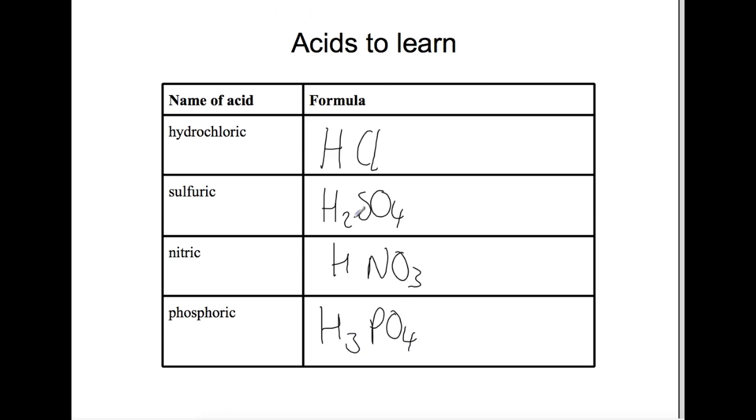You can find the group ions sulfate, nitrate, and phosphate on page 8 of your data book, where you'll find it is SO4 2-, NO3-, and PO4 3-. You notice then that the number of H's that's attached is enough to balance the charge on the group ion.